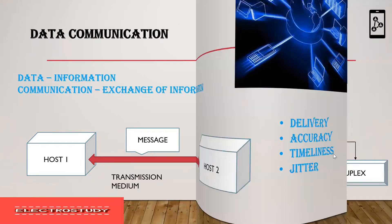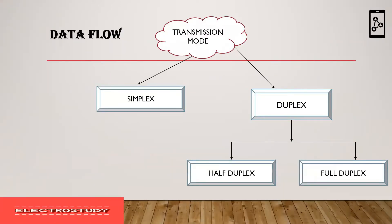Next is data flow, also called the transmission mode. There are two kinds of transmission mode: simplex and duplex. This duplex is further divided into half duplex and full duplex.